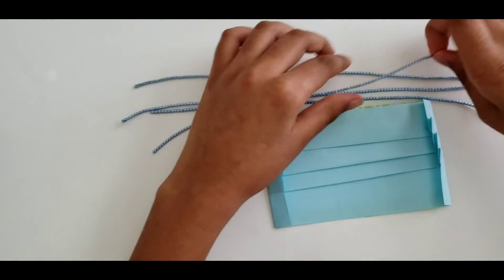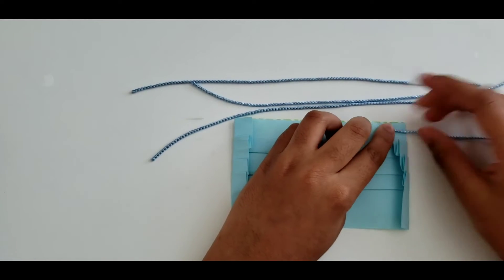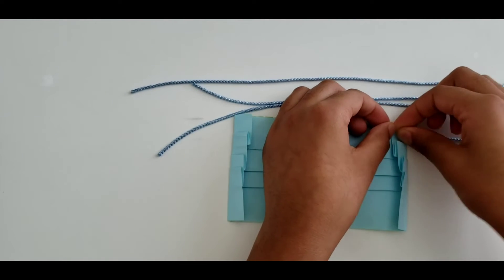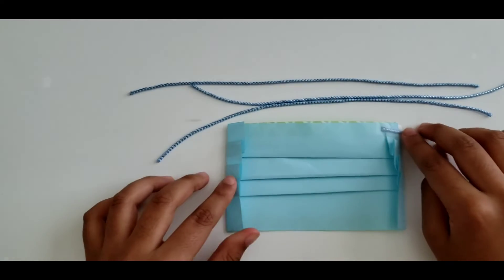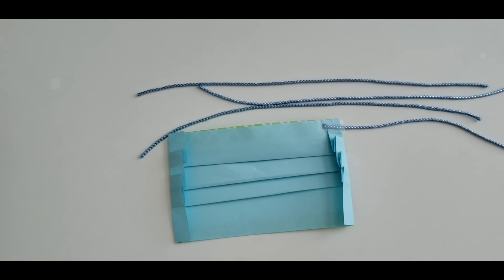So we're going to take this thread, put it on here, take this tape that we just ripped out, and tape it. Now what you're going to do is tape all the rest of the three of them.